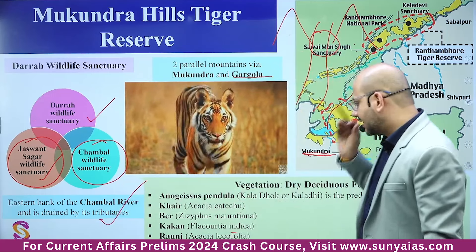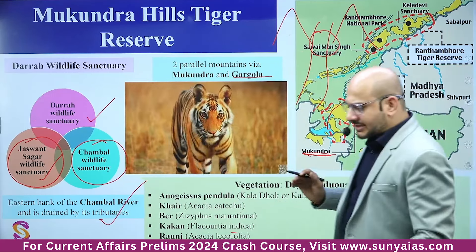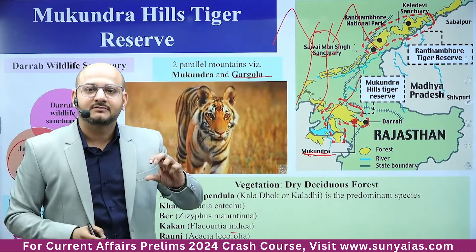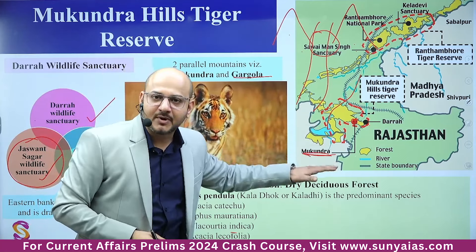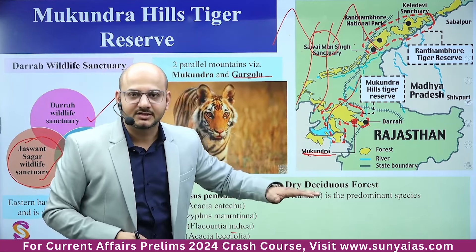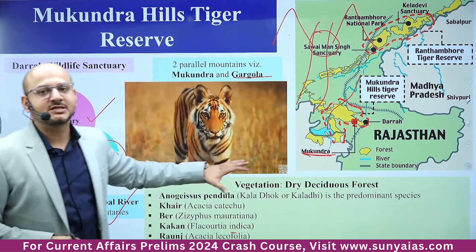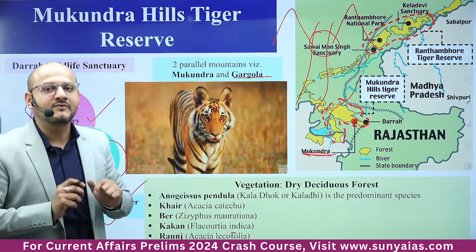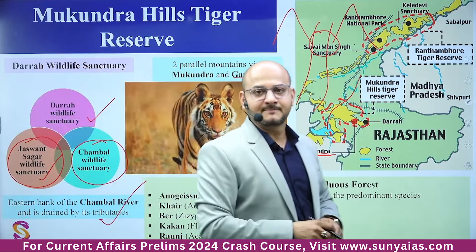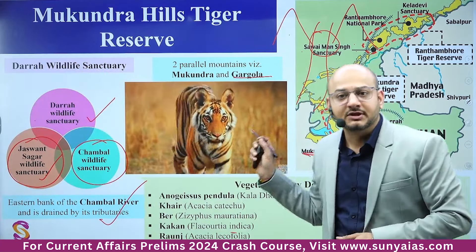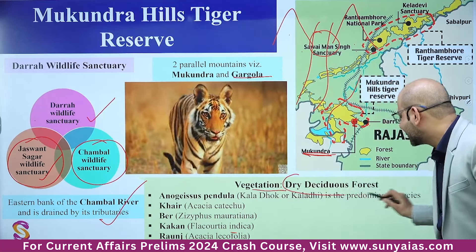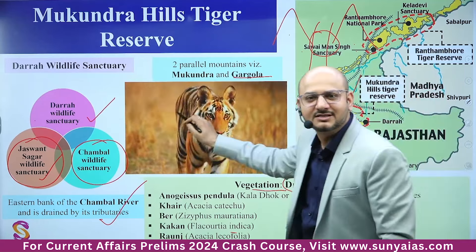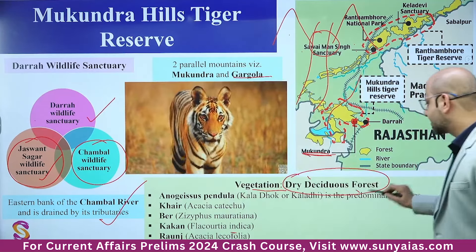UPSC sometimes correlates vegetation and species with protected areas — national parks and tiger reserves. You have to be able to correlate vegetation, species, and location along with which rivers flow through the national park or tiger reserve. The vegetation in Mukundra Hills is dry deciduous forest, which you can relate to its Rajasthan location.